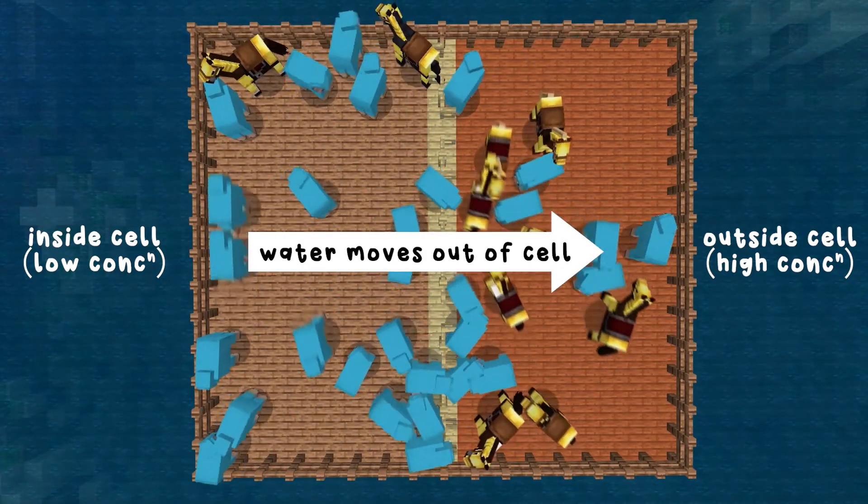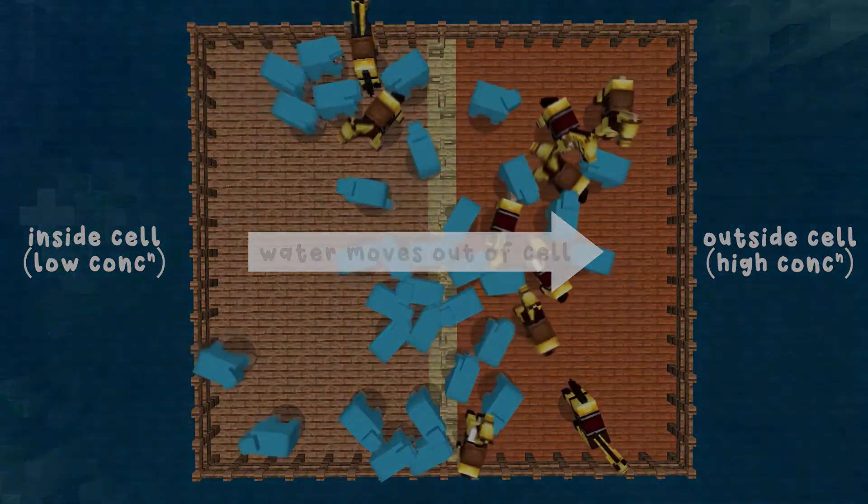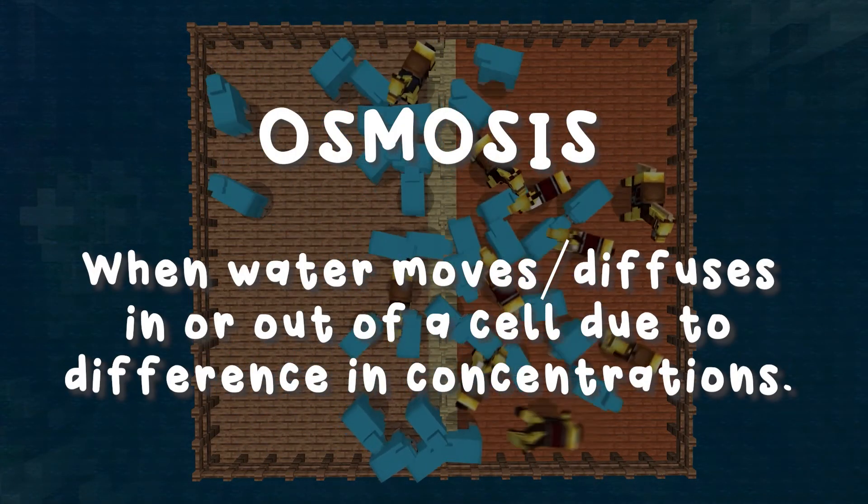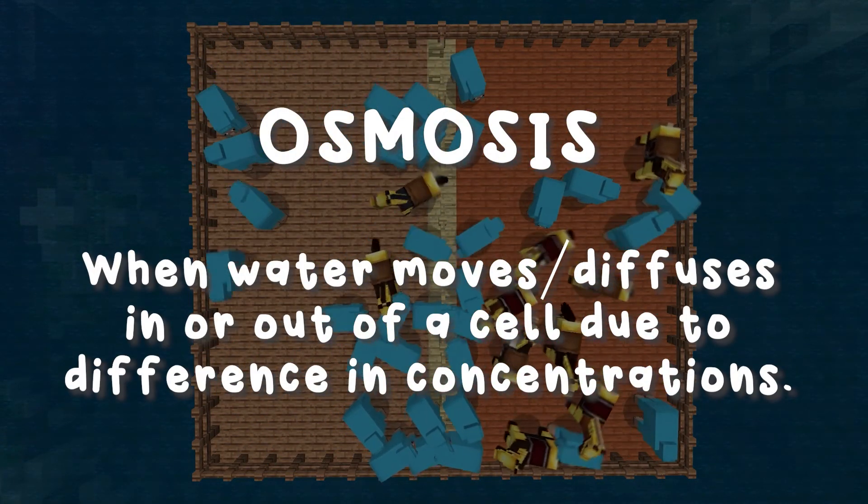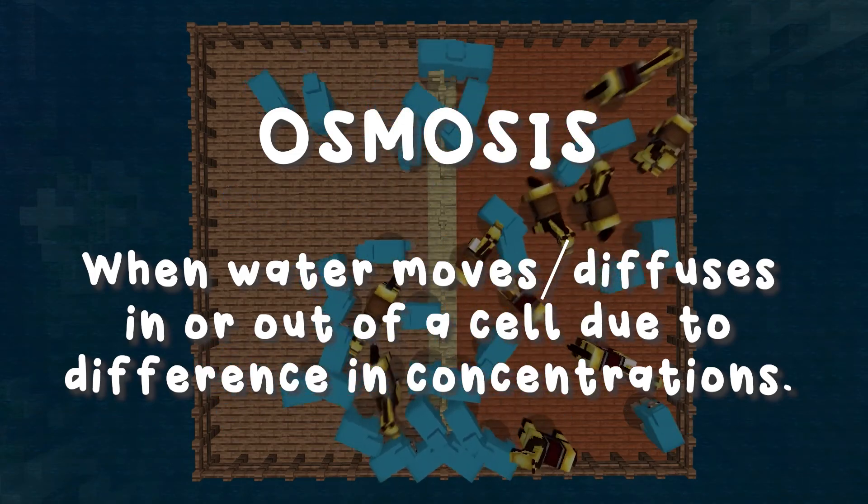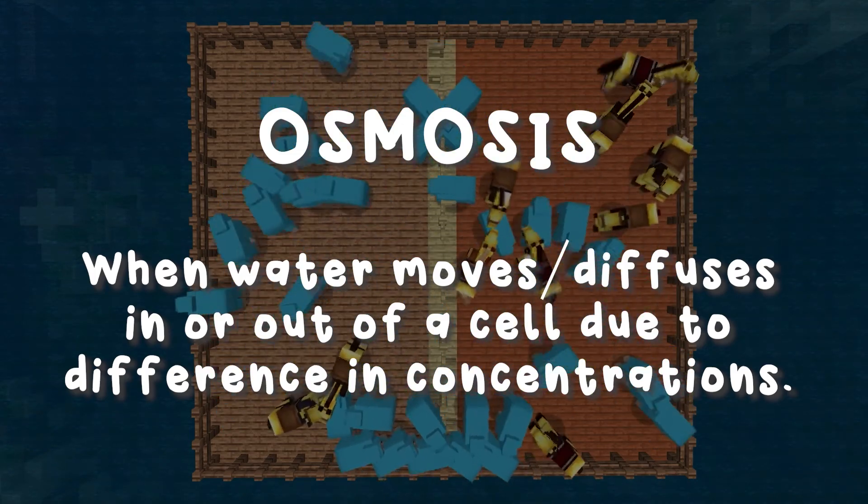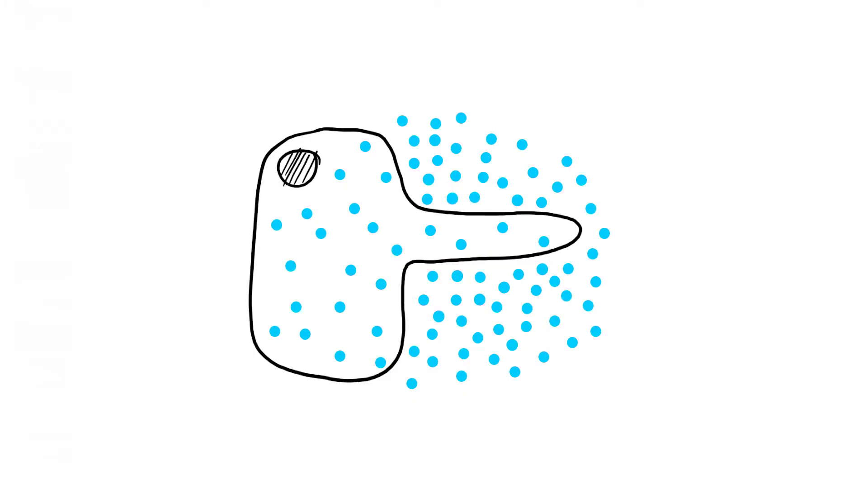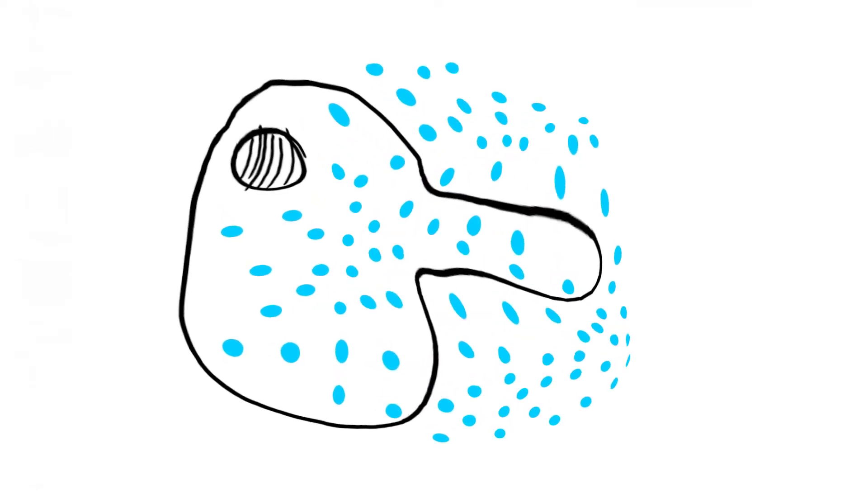This movement of water in and out of cells is called osmosis. Any particles can diffuse, but we call it osmosis when it's water doing it. Incidentally, this is why you shouldn't over-water your plants. If you do, it lowers the concentration of nutrients outside of the root hair cells, meaning that water moves into them. Too much, and the cells can become turgid and explode.